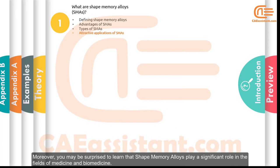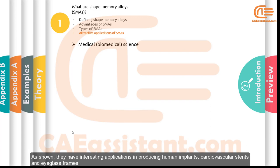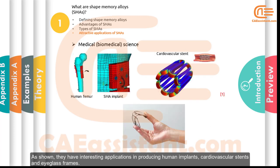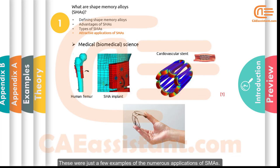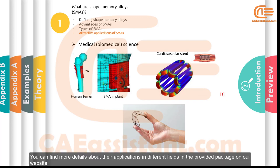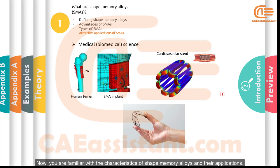Shape memory alloys also play a significant role in the field of medicine and biomedicine. They have interesting applications in producing human implants, cardiovascular stents, and eyeglass frames. These were just a few examples of the numerous applications of SMAs. You can find more details about their applications in different fields in the package provided on our website.